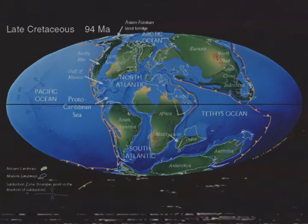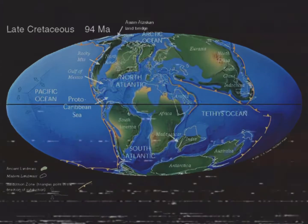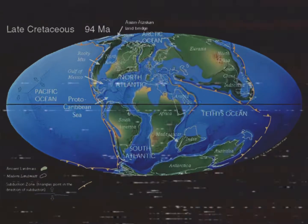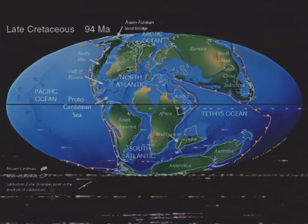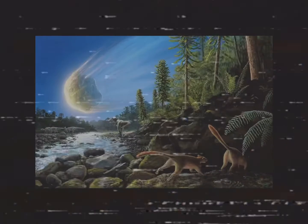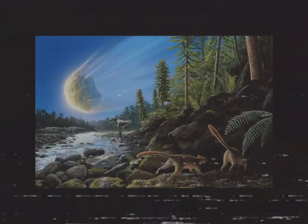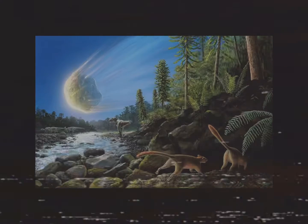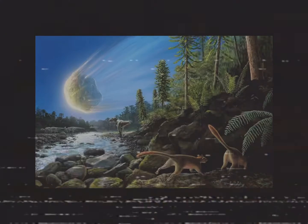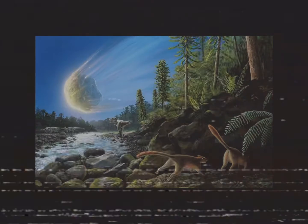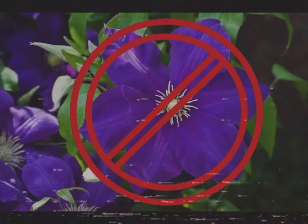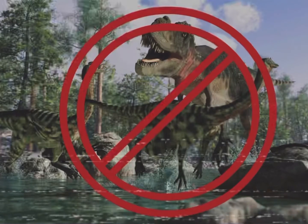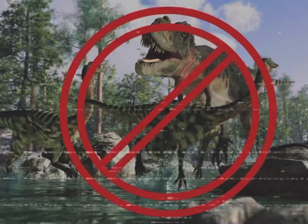For example, the Cretaceous period is an example of extinction, since the asteroid had catastrophic effects after the impact, starting with the death of millions of plants, thus killing all dinosaurs from starvation.